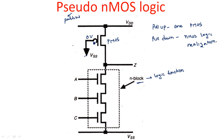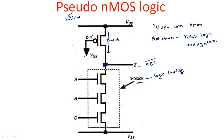The PMOS pull-up transistor with zero volts applied is always ON, and it simply acts like a resistor, so there is current flow from VDD down to the output point. Depending upon the NMOS realization, the output is determined. For example, with NMOS transistors A, B, C in series, the output function is A·B·C bar — the complement — which means it is a three-input NAND gate designed with pseudo NMOS logic.